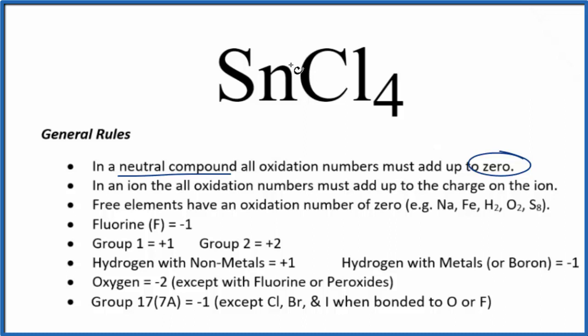Tin is a transition metal, so we can't just look at it and know its oxidation number. We have to look at what it's bonded to. So we go down our list, group 17, sometimes called 7A. Chlorine is in group 17, these are called the halogens, and it will have an oxidation number of minus 1, with a few exceptions. Tin's not one of the exceptions. So each chlorine atom has an oxidation number of minus 1.